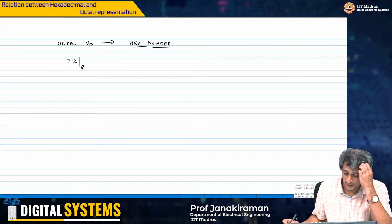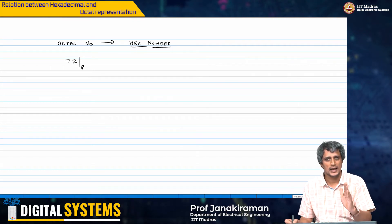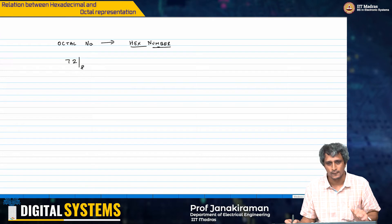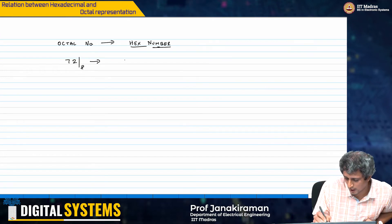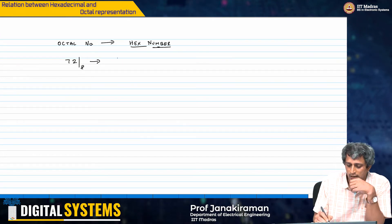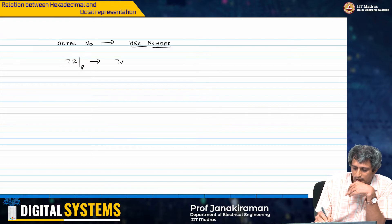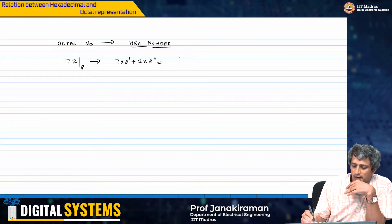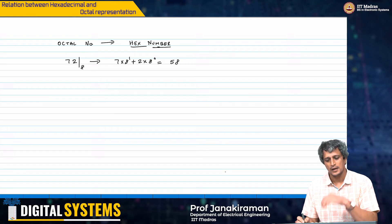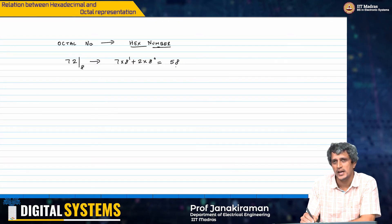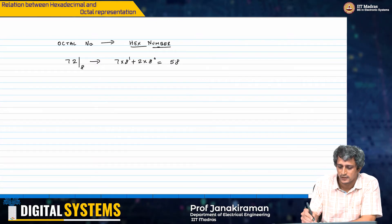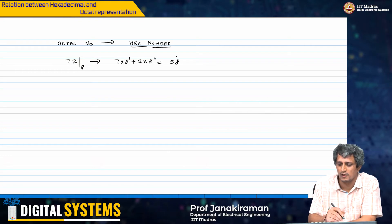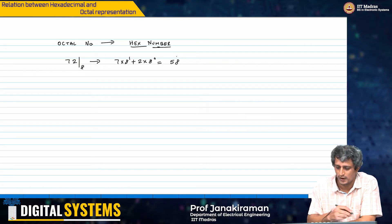All we have to do is, one way like I said is to take this number and convert it to decimal. What is 72 to base 8? It is 7 into 8 power 1 plus 2 into 8 power 0, which is 7 times 8 are 56 plus 2, which is 58.